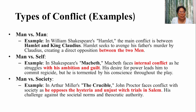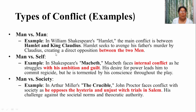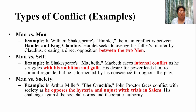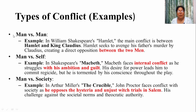With the help of examples, let us understand man versus man. In William Shakespeare's Hamlet, the main conflict is between Hamlet and King Claudius. Hamlet seeks to avenge his father's murder by Claudius, creating a direct opposition between two men. In Hamlet, we can also see man versus self conflict — his soliloquies show that he is fighting with his inner self and is unable to take a final decision. The famous soliloquy 'To be or not to be' is indicative of the fact that he is struggling against his own self.